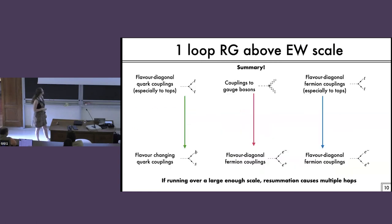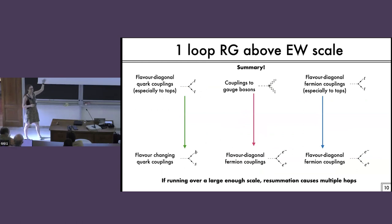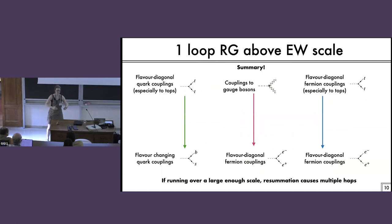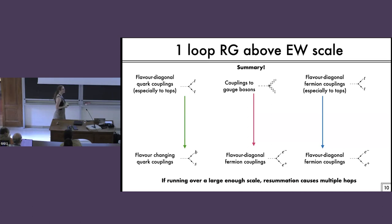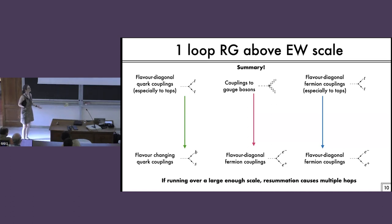If you're running over a large enough scale, you need to resum the large logs and you can have essentially multiple hops. So if you start off with a coupling to gluons, you're going to get a coupling to tops, and then you're going to get flavor-changing couplings, or you're going to get electron couplings. So it's difficult over a large separation of scales to suppress any particular coupling — you're going to get them all. This is the spirit of effective field theories: you write down everything that can happen because in general, it will.